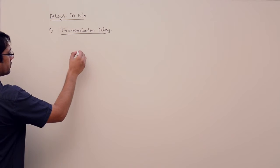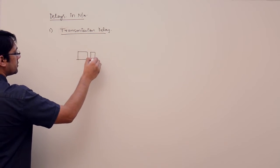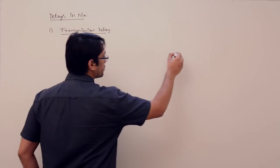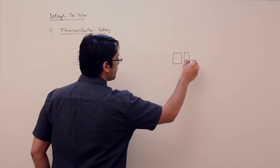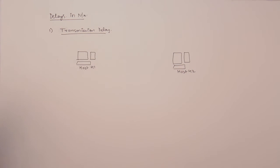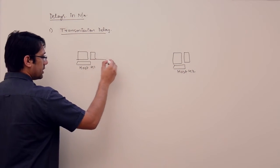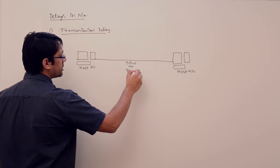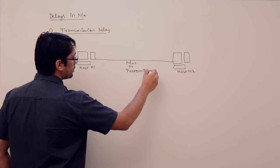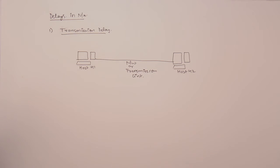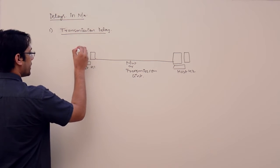What is transmission delay? Assume this is one host, host H1, and this is the second host, host H2, and they have a transmission media or transmission link between them. Host H1 is communicating with host H2, and for communicating, host H1 is sending some data packets to H2.